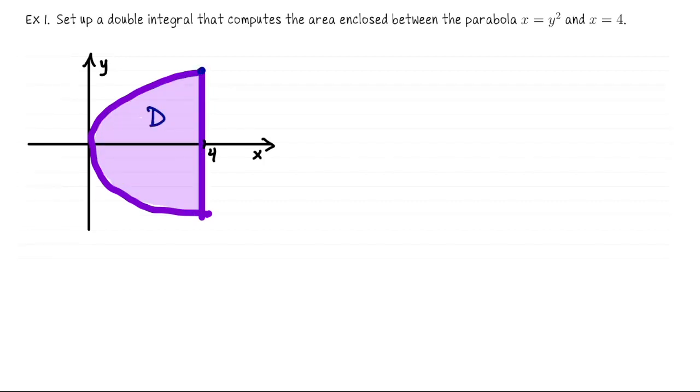Let's find these points of intersection. When x equals 4, y must have been 2 or negative 2. You could set this up as a type 1 region where x is between 0 and 4 and y is between negative square root of x and square root of x, but I would rather set it up as a type 2 region. In that way we would view y as bounded between negative 2 and 2 and x is bounded between y squared and 4.